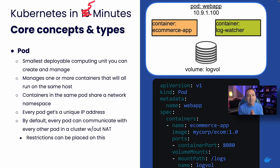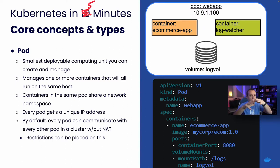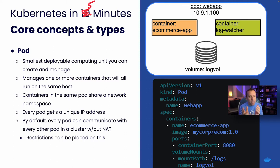The pod in Kubernetes is the smallest deployable computing unit that you can create and manage. It wraps one or more containers. If you're used to deploying containers and controlling them, you've got to think abstractly now — the pod kind of wraps around them. One thing you get when you deploy a pod is a guarantee that if you have multiple containers, all containers in that pod will run on the same physical host.